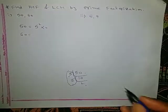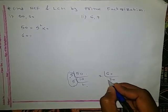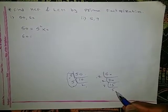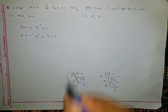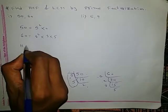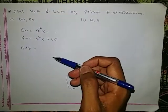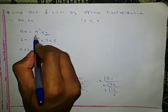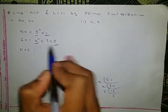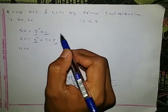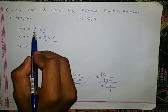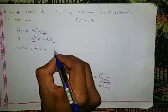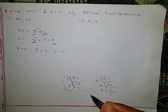Next, for 60: 60 = 2 × 30 = 2 × 2 × 15 = 2² × 3 × 5. To find the HCF, we check numbers common to both. 2 is common and 5 is also common, but 3 is not common, so 3 won't appear in the HCF. Out of 5² and 5, the smaller is 5. Out of 2 and 2², the smaller is 2. So HCF of 50 and 60 is 5 × 2 = 10.